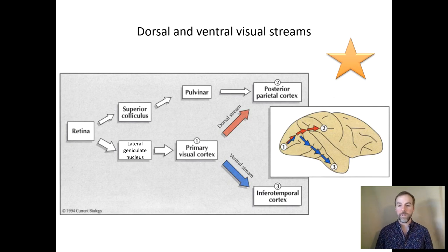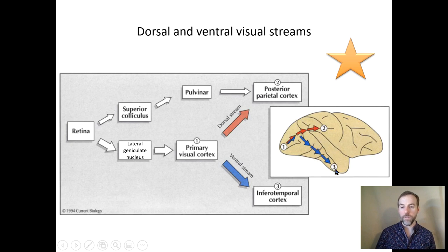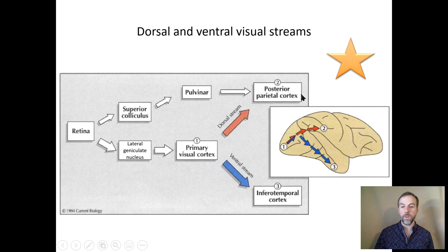From the primary visual cortex, the cortical visual areas are largely divided into the ventral stream — shown here in blue — which terminates in the inferotemporal cortex: the inferior or lower part of the temporal lobe. And the dorsal stream travels up to the dorsal aspects of the brain and terminates specifically in the posterior parietal cortex, in the more posterior parts of the parietal lobe.